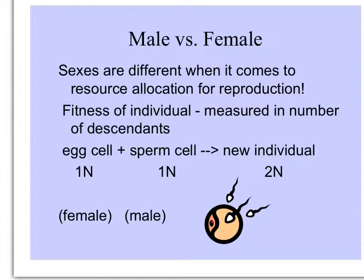In most vertebrates and many animals, the sexes are different when it comes to resource allocation for reproduction. But for any individual, fitness is measured in the number of descendants, and each offspring is the product of a sex cell. From each parent, two haploid cells — egg and sperm — combine in fertilization